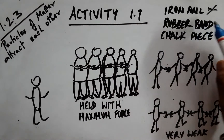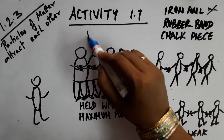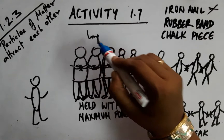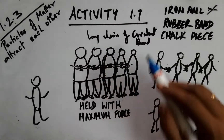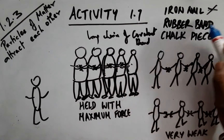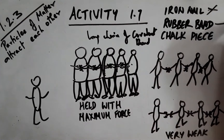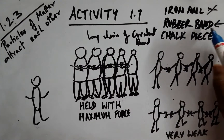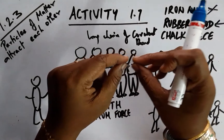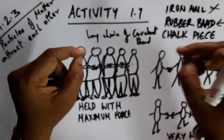In the rubber band, long chains of covalent bond forces operate. We cannot remove the chain.